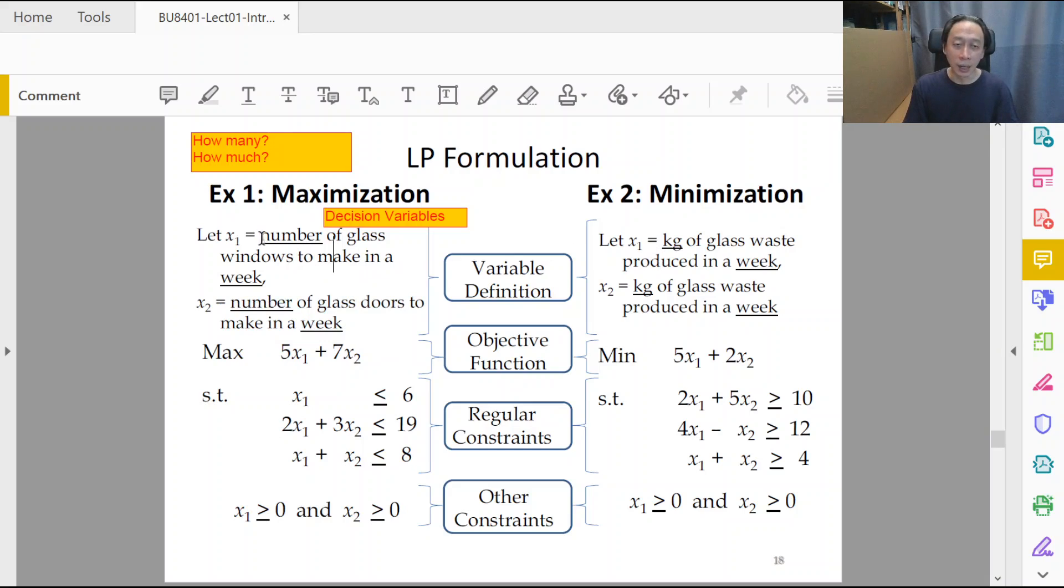Notice that I underlined two categories of words in each definition of the decision variable. The point here is that you have to make sure that at least these two attributes are there in the definition of each decision variable. What are these two attributes? It's the unit.